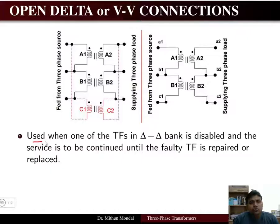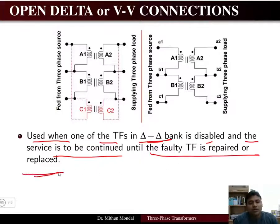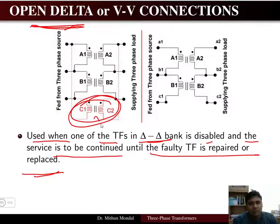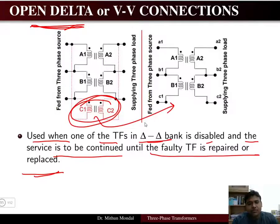The open-delta connection is used when one transformer in the delta-delta bank is disabled and service must continue until the faulty transformer is repaired or replaced. The remaining two transformers maintain the load, and once repairs are complete the third transformer is returned to service.